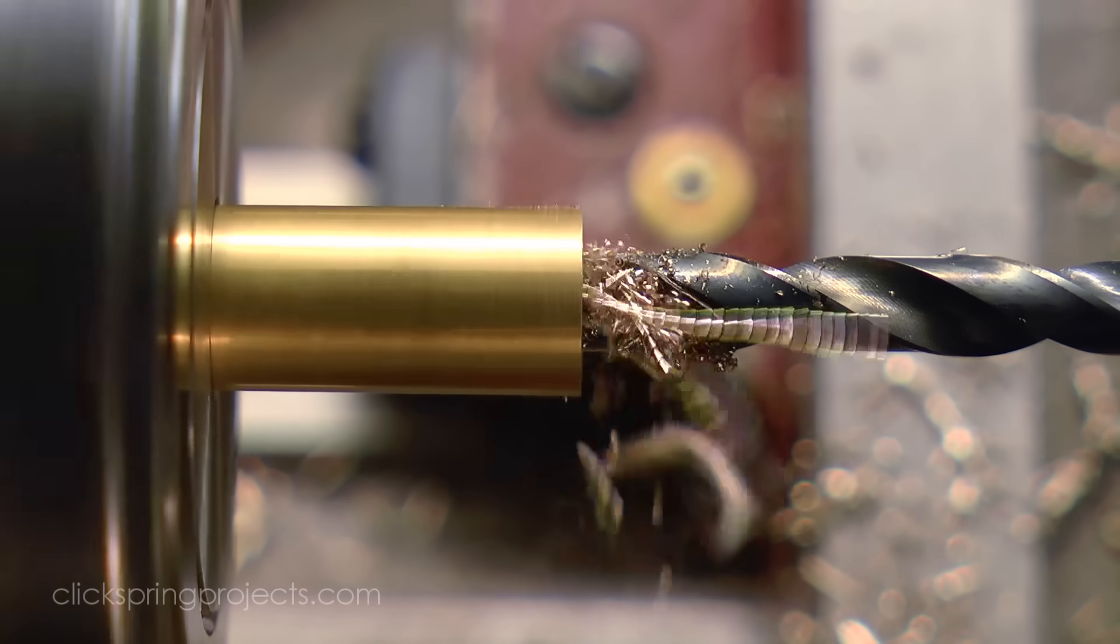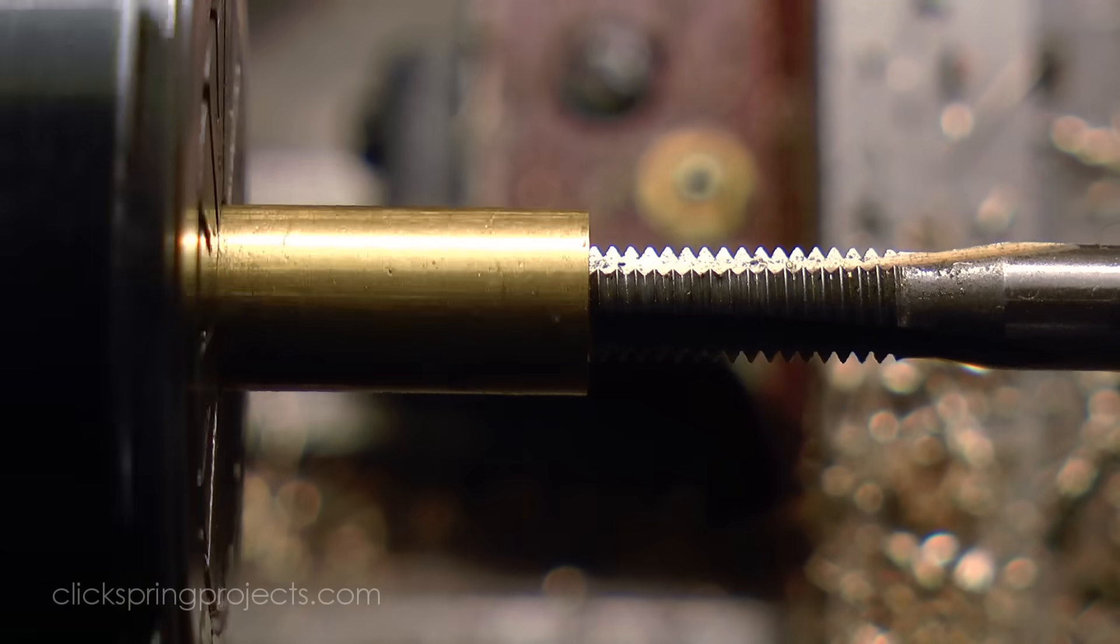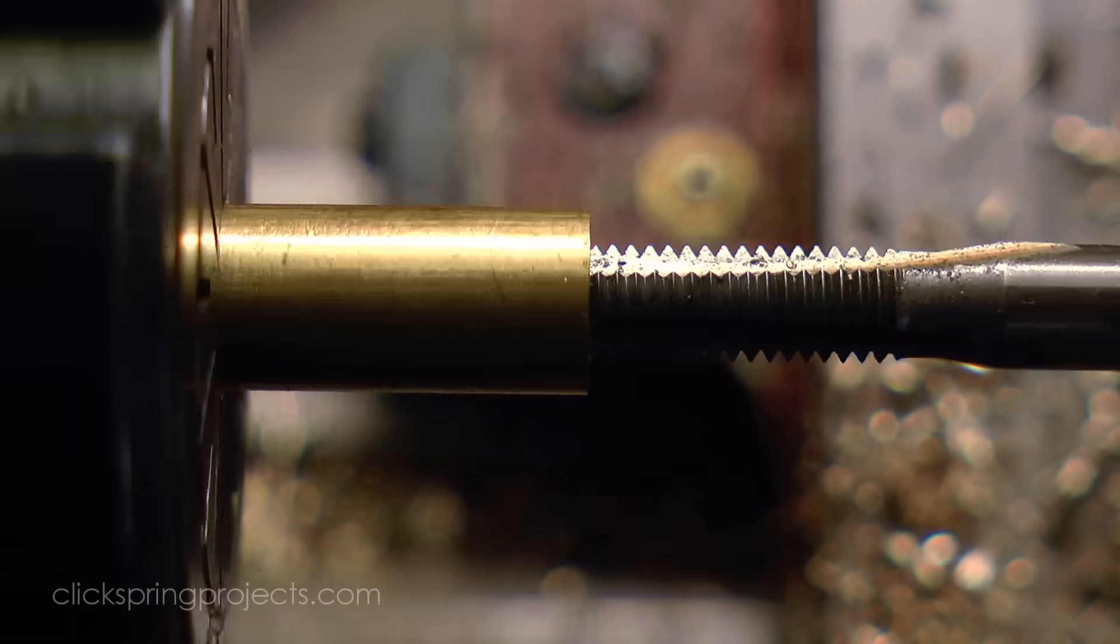It's convenient to contain the spring within the barrel of the tool using a grub screw, so the now drilled interior is provided with a suitable thread.